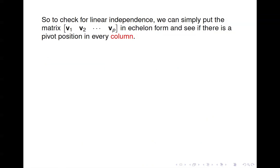To check for linear independence, we don't have to append the zero column on the augmented side. We can just look at the coefficient matrix, put it in echelon form, and see if there is a pivot position in every column — because we want to know whether there are free variables or not.